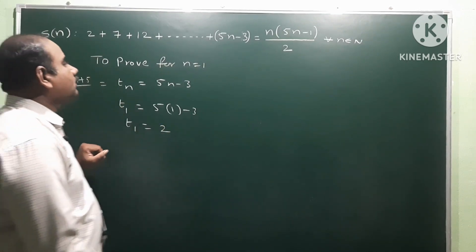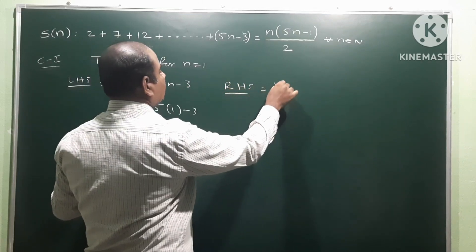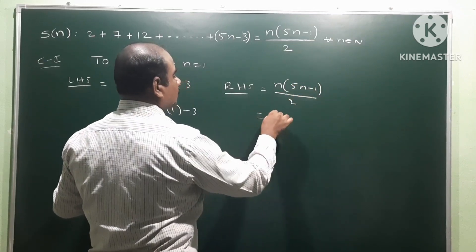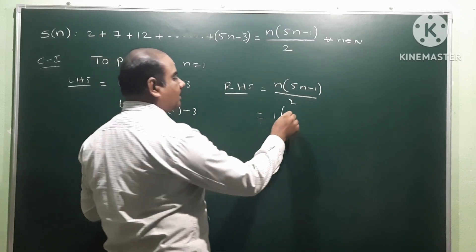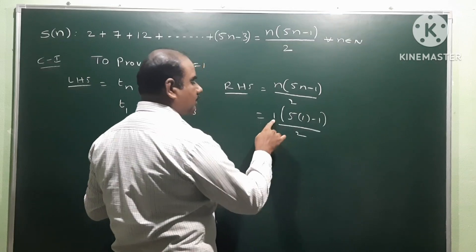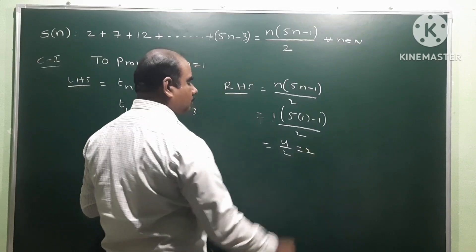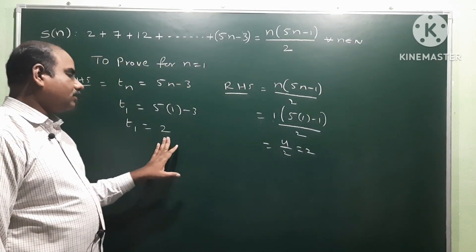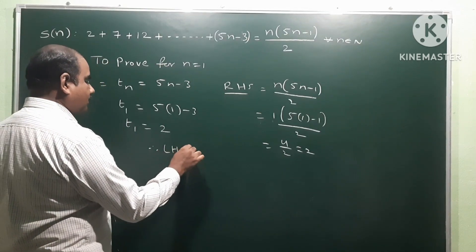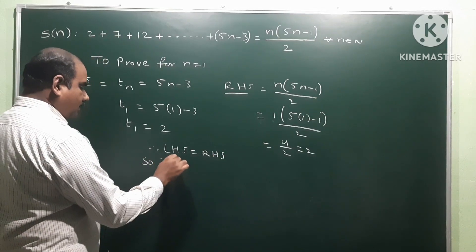So T1 equals 5 minus 3 equals 2, which is our first term. Next, RHS: n into (5n minus 1) by 2. Substituting n equal to 1: 1 into (5 into 1 minus 1) by 2, which is 1 into 4 by 2, equals 2. Therefore LHS is equal to RHS, so it is true for n equal to 1.